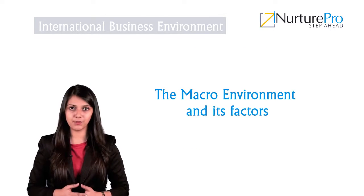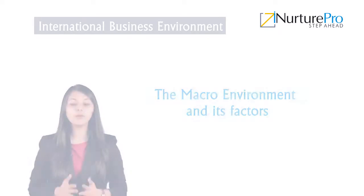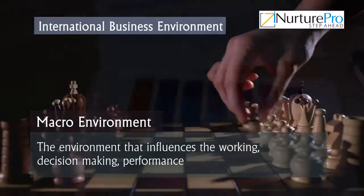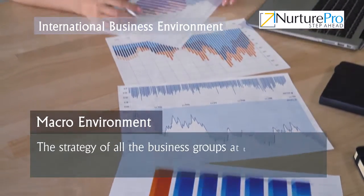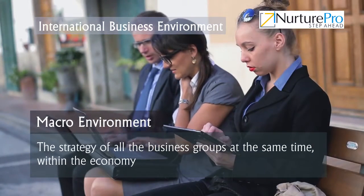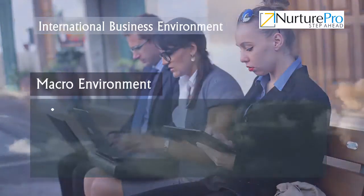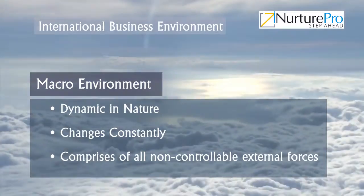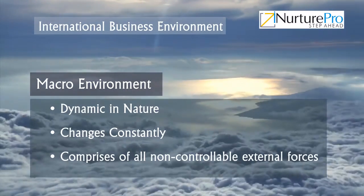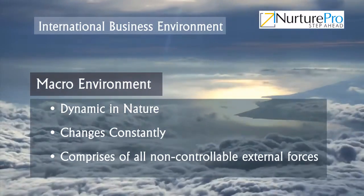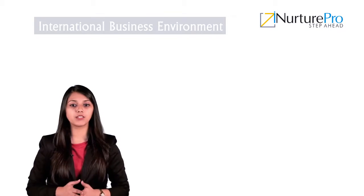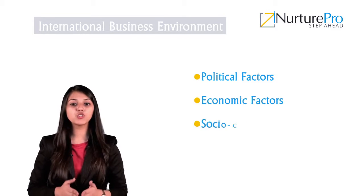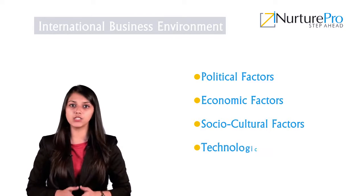Now let us see the macro environment and its factors. The macro environment is the environment that influences the working, decision making, performance movements and the strategy of all the business groups at the same time within the economy. It is dynamic in nature, changes constantly and comprises of all non-controllable external forces that have a powerful influence on the functioning of the organization. The four factors of the macro environment are political factors, economic factors, social cultural factors and technological factors.